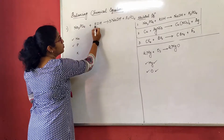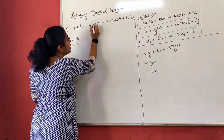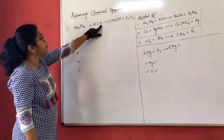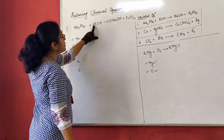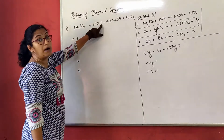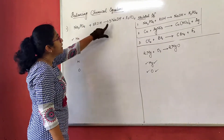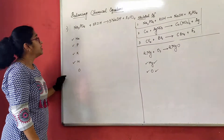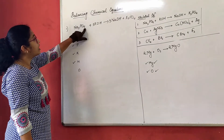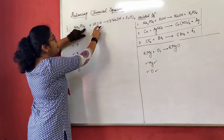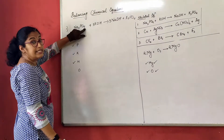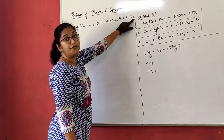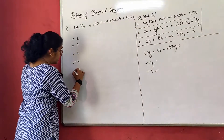Hydrogen: we have to count with the coefficient 3, so hydrogen is 3 on the reactant side. Here hydrogen is 3 again — balanced. Last left is oxygen. Oxygen here is 4 and here is 3 — so 4 plus 3 equals 7 on the reactant side. Oxygen on the product side is 3 plus 4, which is also 7 — balanced.